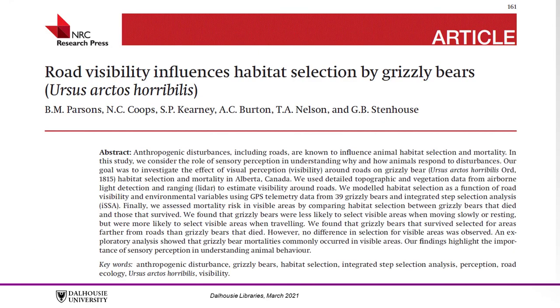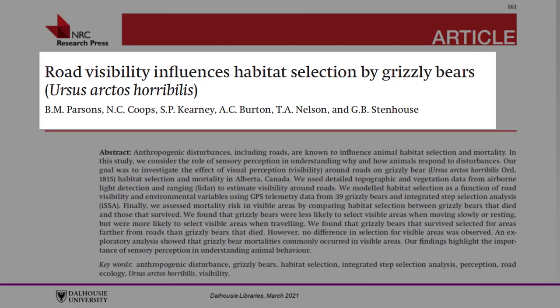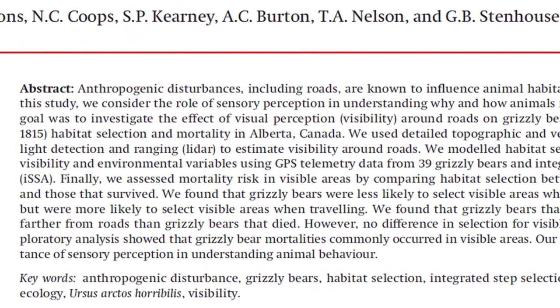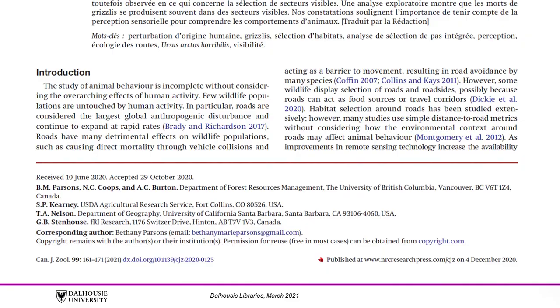The first kind of article is a research article. A research article reports original research results — it is the first time these results appear in published form. Typically a research article is organized into sections similar to those you may have seen in a lab report. There is often an abstract summarizing the research and results. The introduction usually follows the abstract and is an overview of the topic, but is not always labeled.